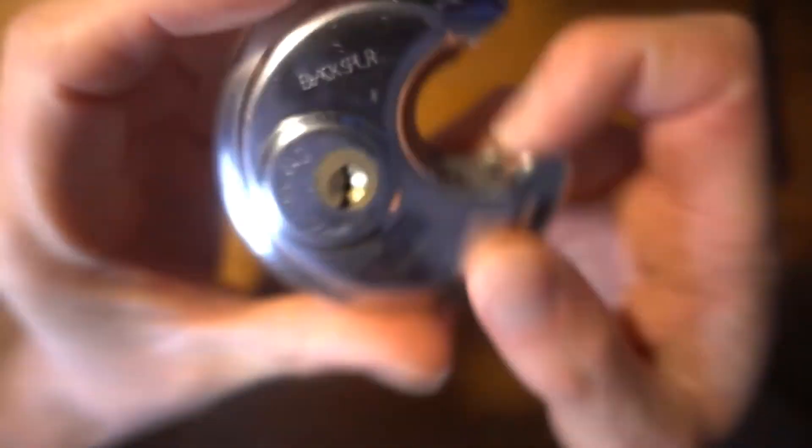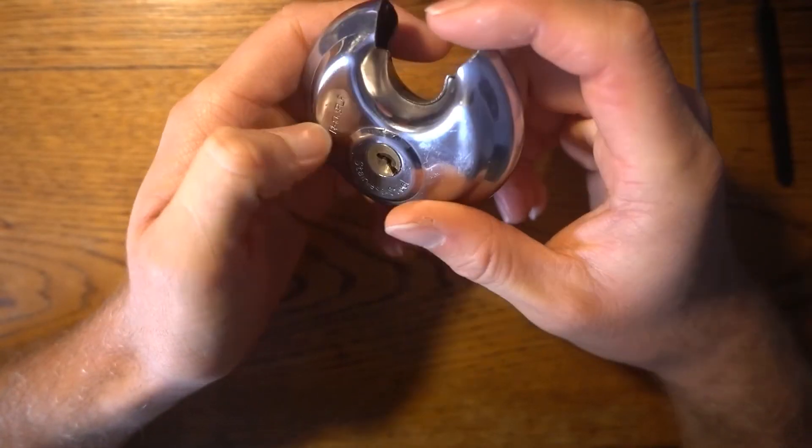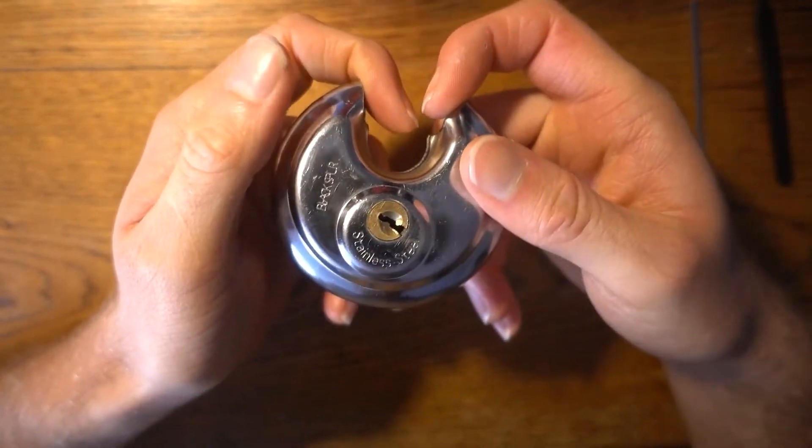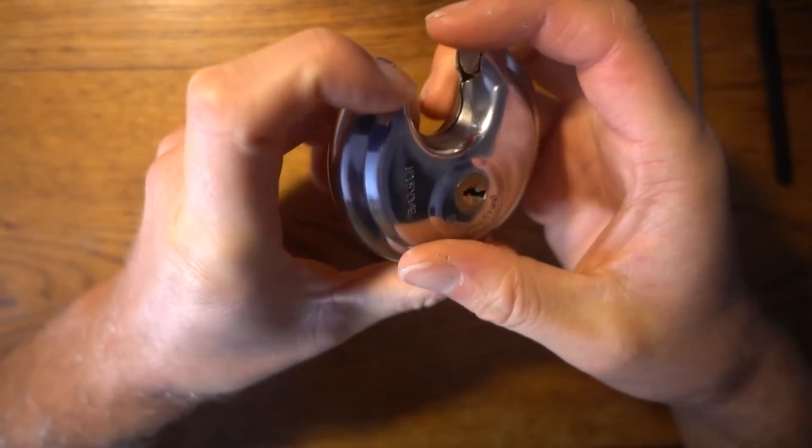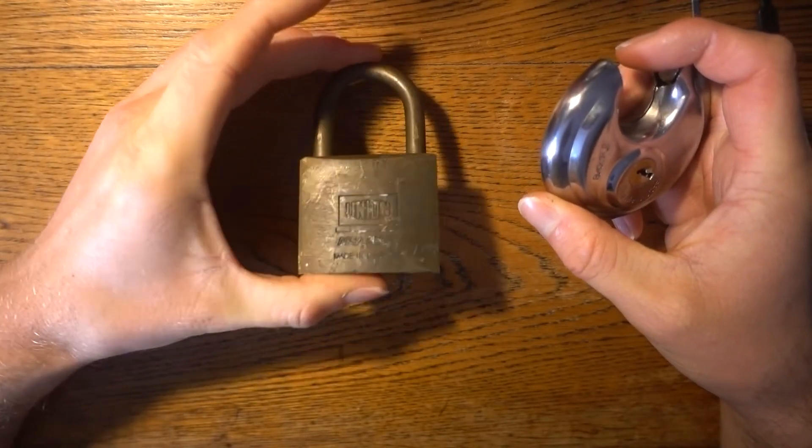This is the Black Spur disc padlock, and I was so happy to pick one of these. They're so satisfying because usually I'm just used to these main locks and these padlocks.